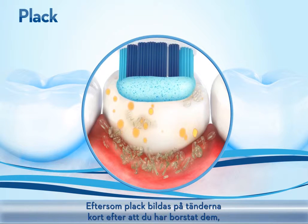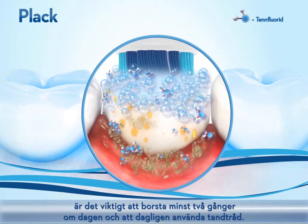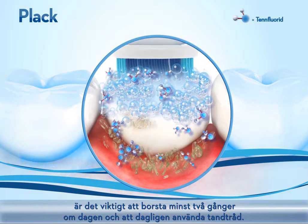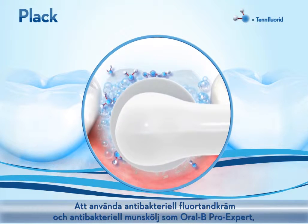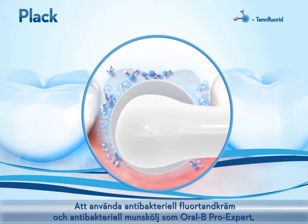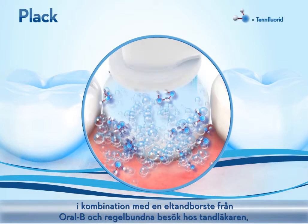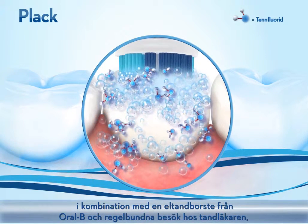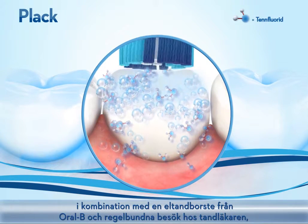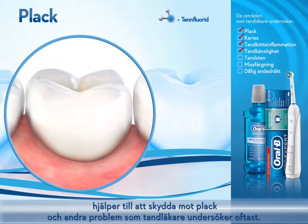Since plaque begins forming on your teeth shortly after brushing, it's important to brush at least twice a day and floss daily using a multi-benefit antibacterial fluoride toothpaste and antibacterial rinse such as Oral-B Pro Expert, along with a power toothbrush such as Oral-B. Regular professional cleaning and check-ups helps protect against plaque and other areas dental professionals check most.